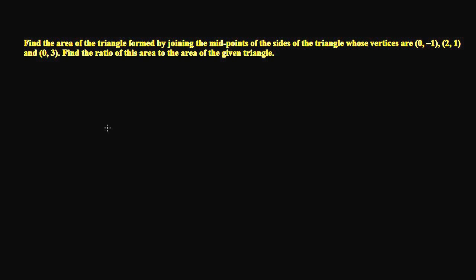Based on finding the area of a triangle in coordinate geometry, here we have another question. The question is saying find the area of a triangle formed by joining the midpoints of the sides of the triangle whose vertices are (0,-1), (2,1), and (0,3). Find the ratio of this area to the area of the given triangle.